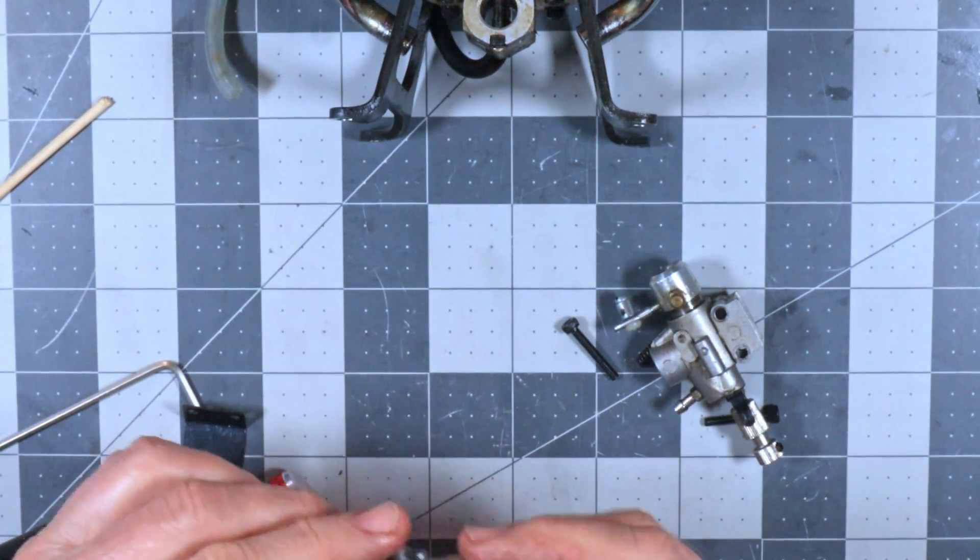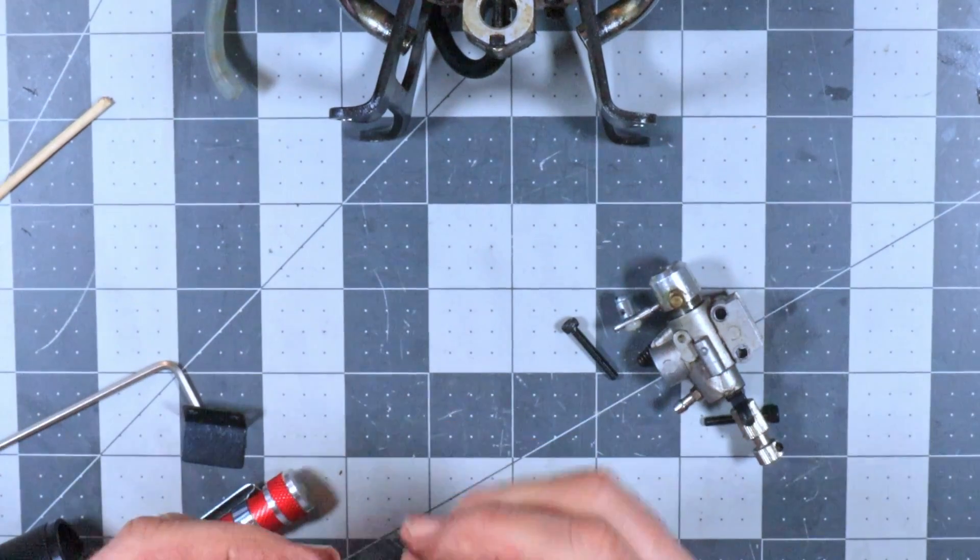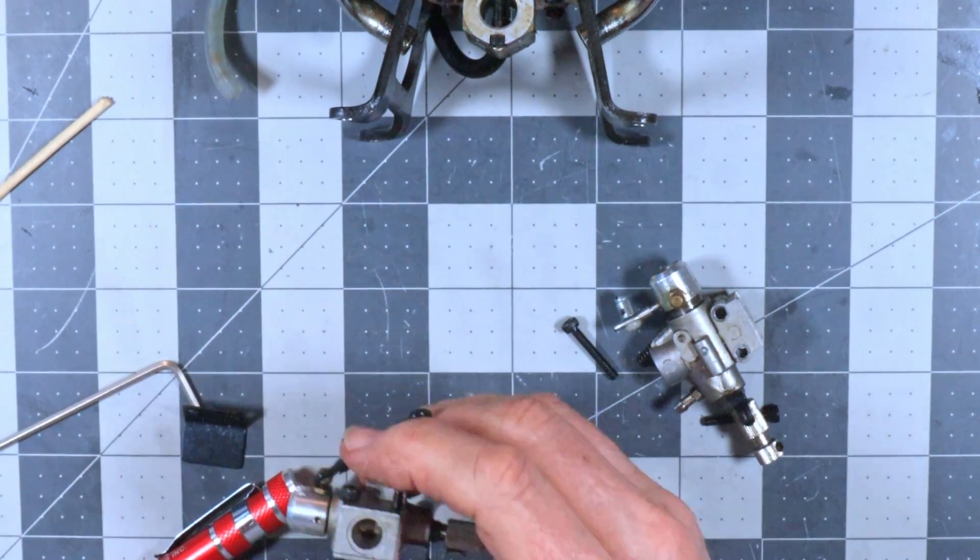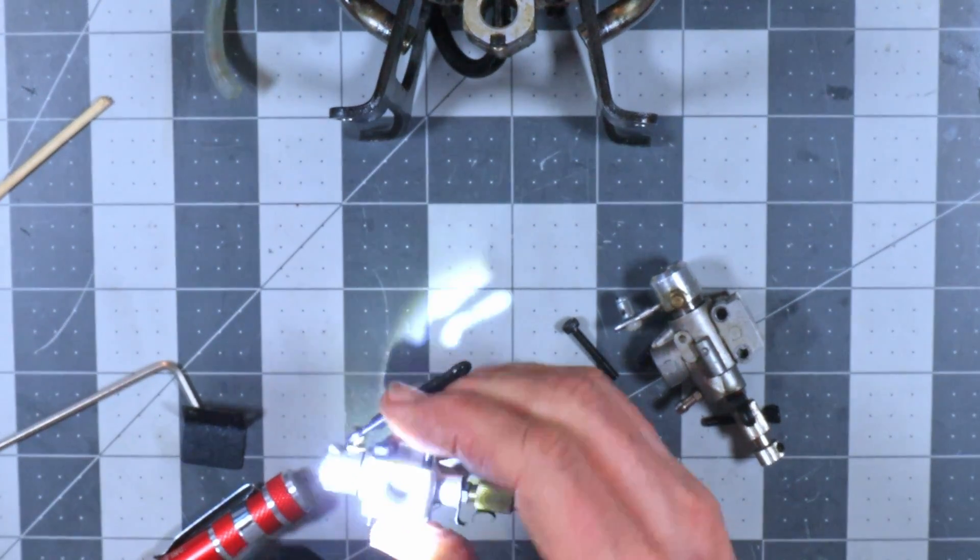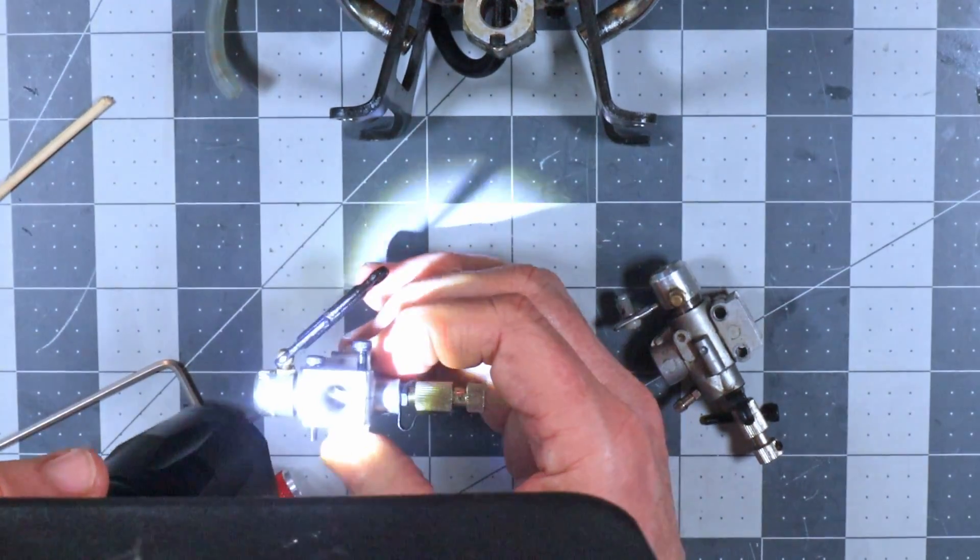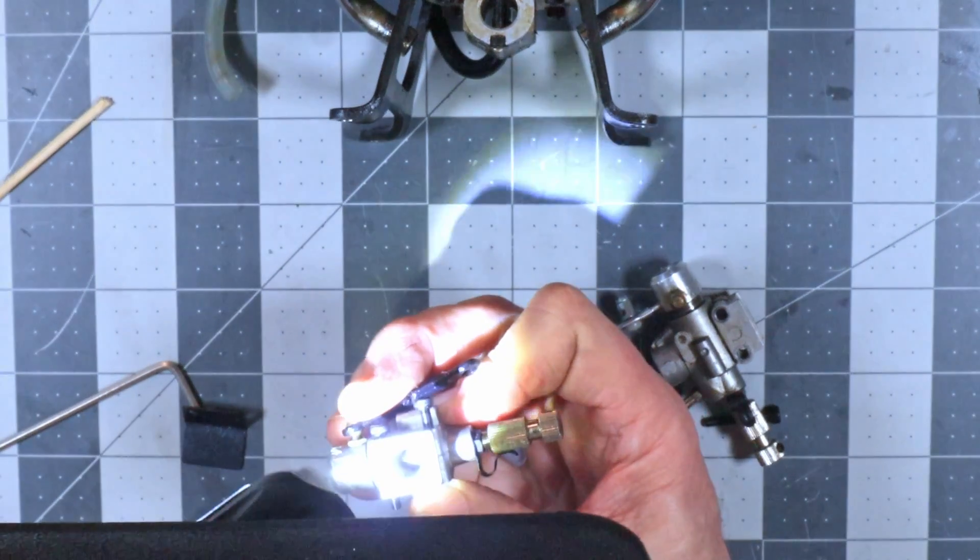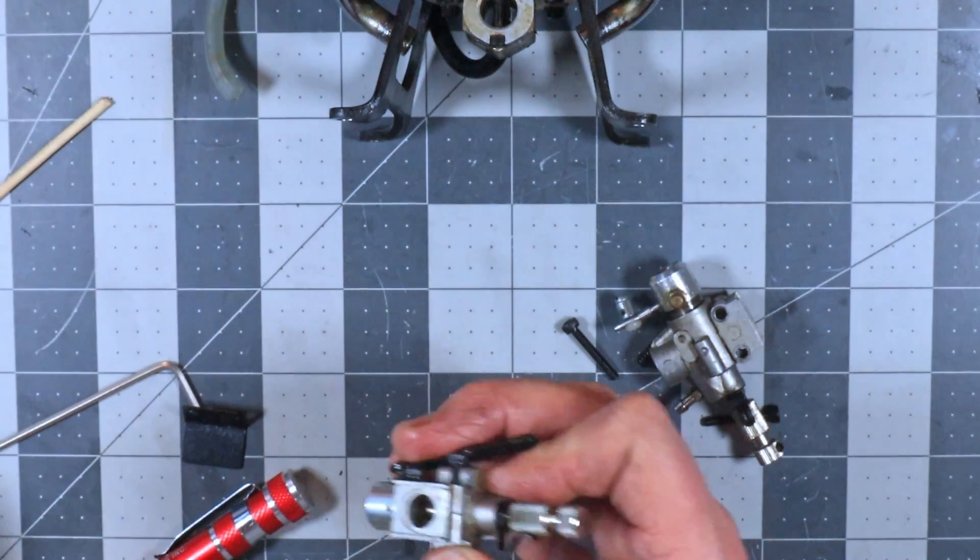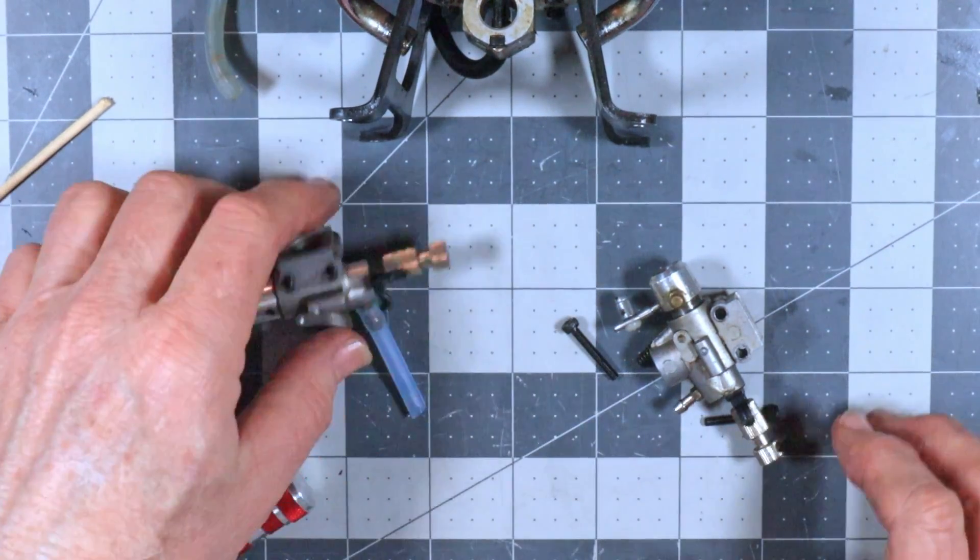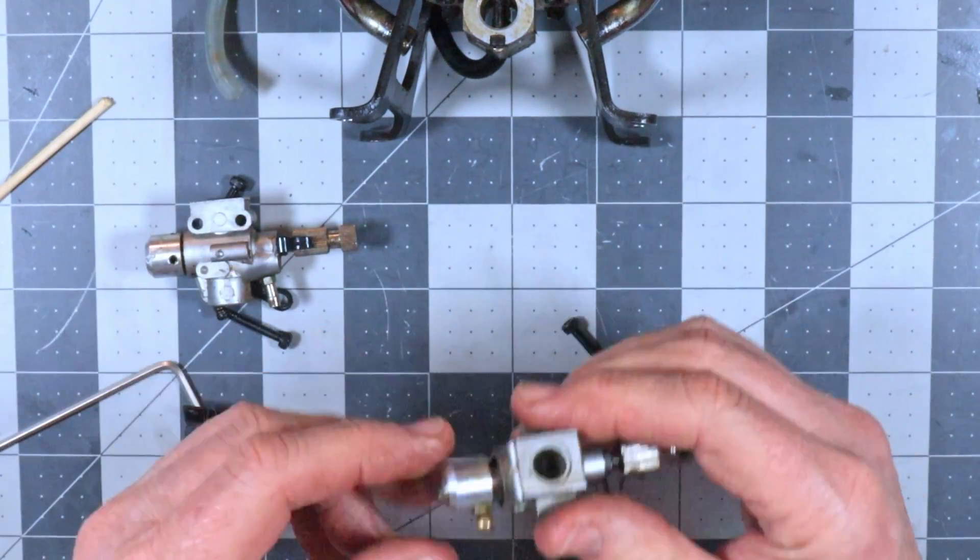Now the only kicker that's going to be is it's very difficult for me to see exactly how much opening I've got on here with my throttle stop screw. Okay, I can see it a little bit, it's just a little bit. So now what I've got to try and do is try and reproduce this exact same setup over on this carb.